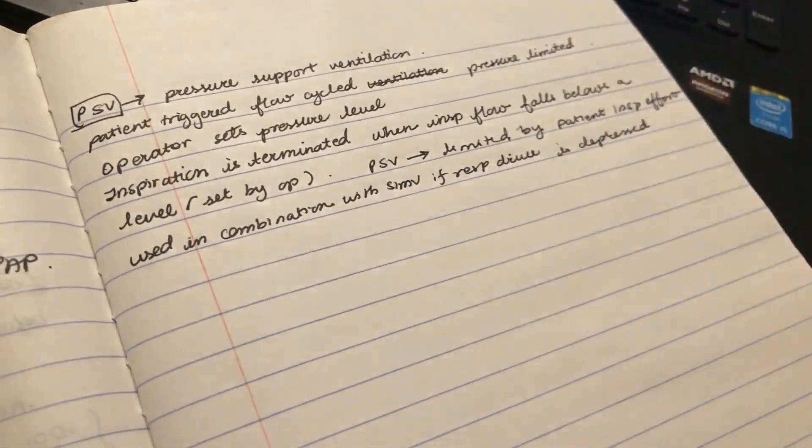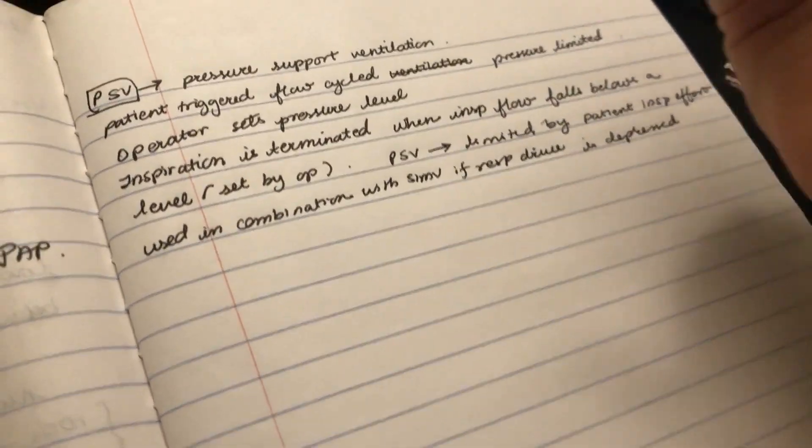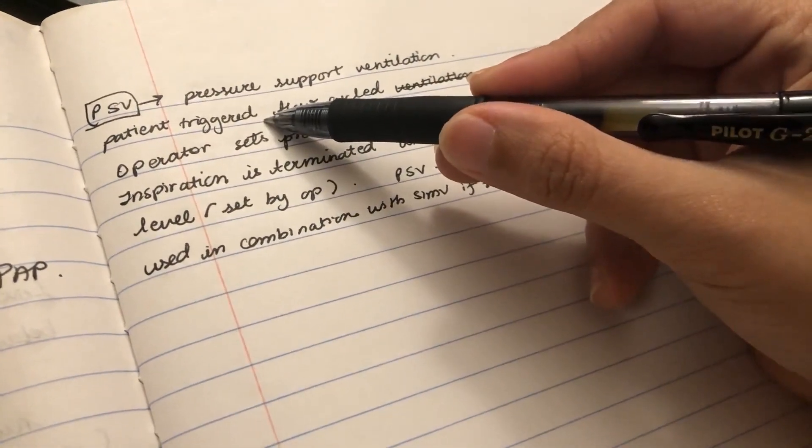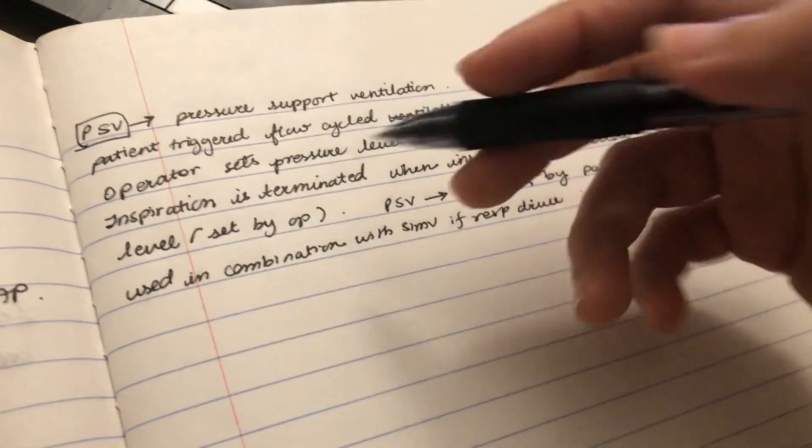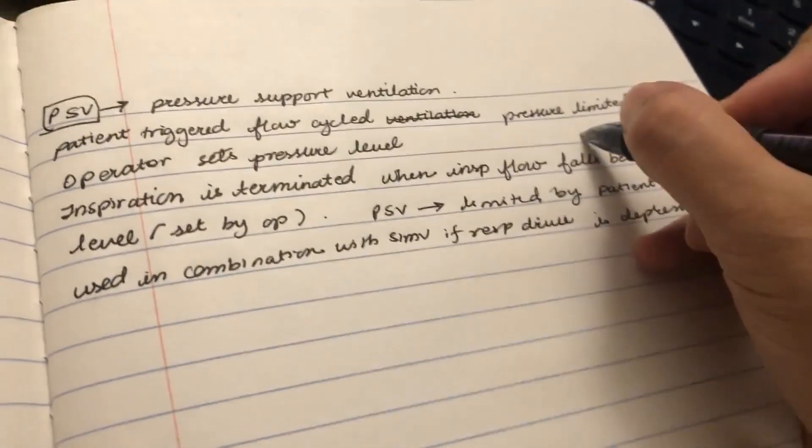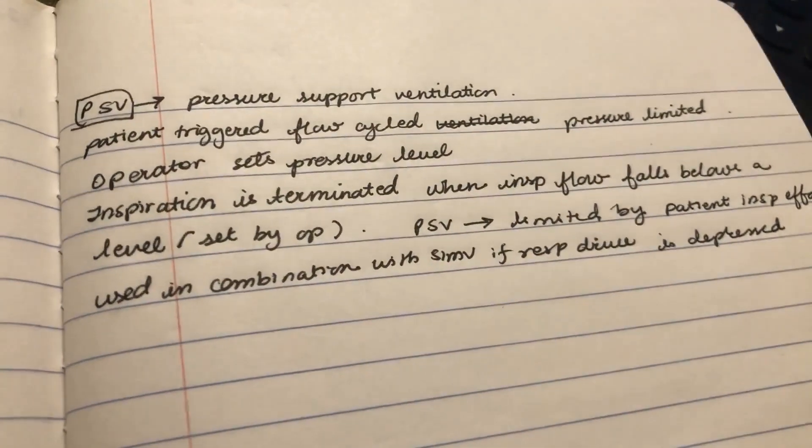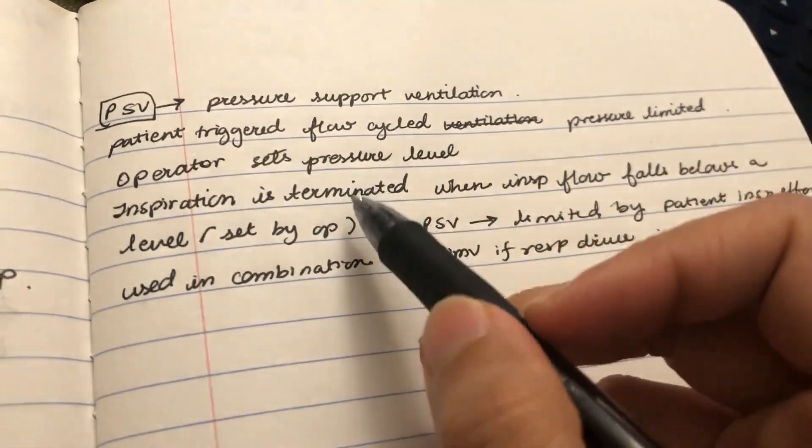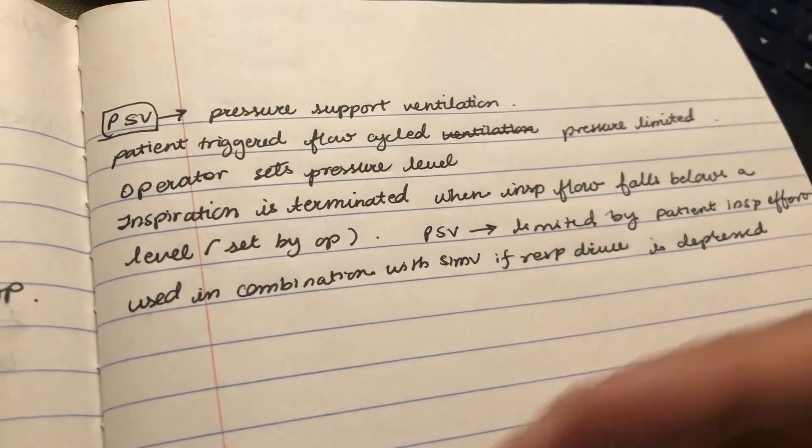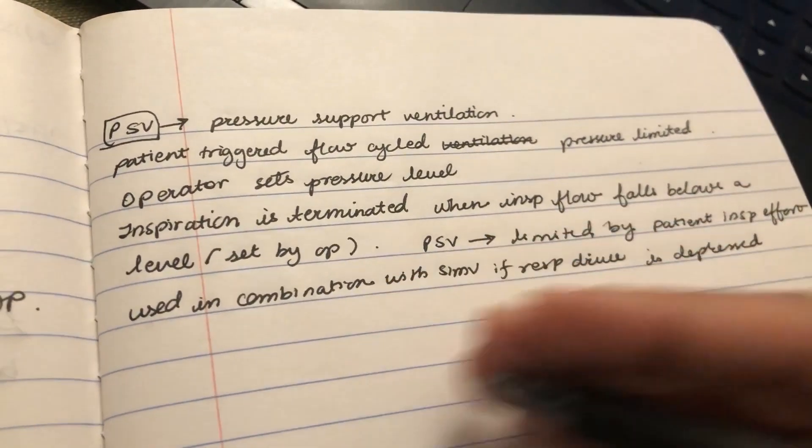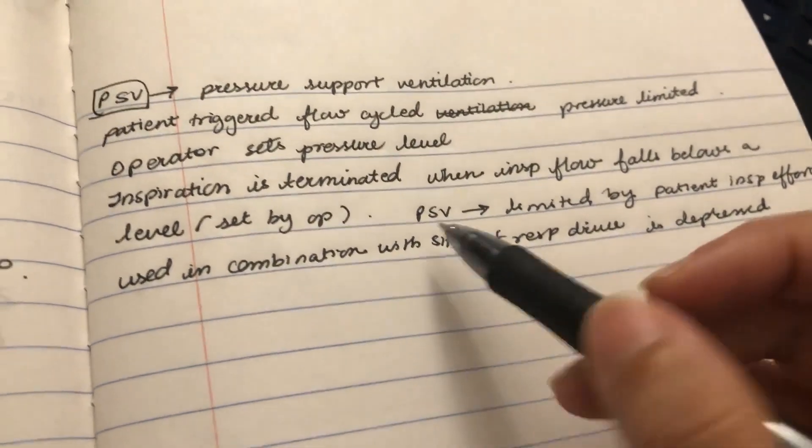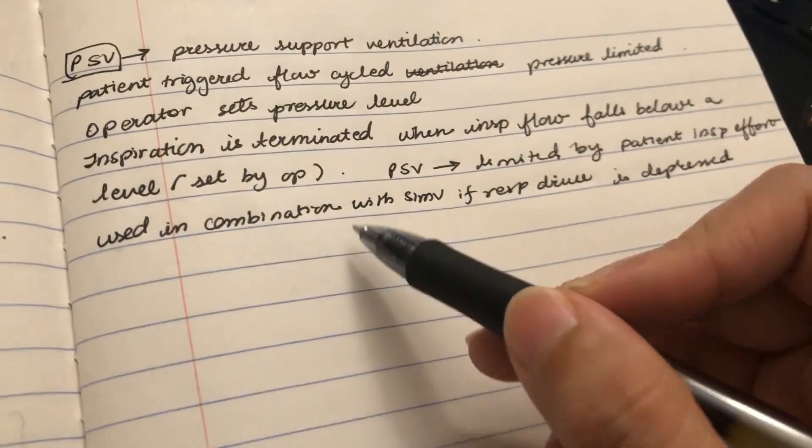Pressure support ventilation - the patient triggers the breath and it's flow cycled, pressure limited. Once the pressure is reached, then breath stops. You set the pressure, and when the inspiratory flow falls, you exhale.